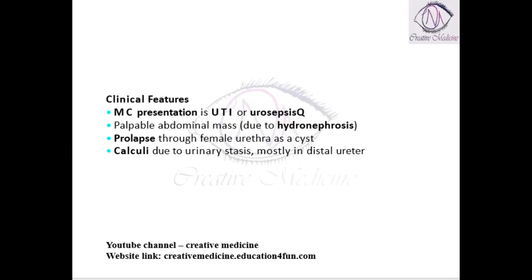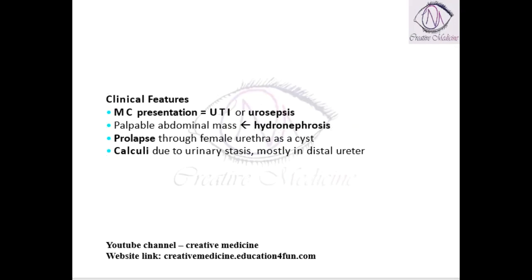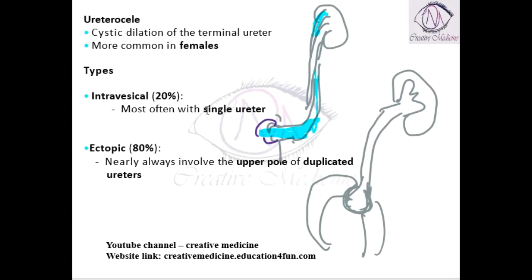Clinical features of ureterocele: the most common presentation is urinary tract infection or urosepsis. The patient can also have hydronephrosis, because the tip of the ureterocele has a very small opening, making it very difficult for urine to pass. As a result, accumulation of urine occurs and slowly this backs up into the pelvis, resulting in hydronephrosis.